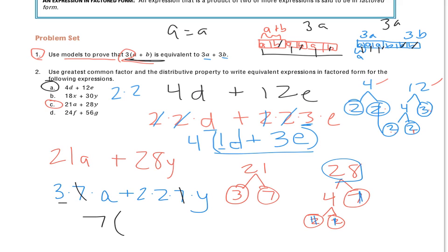So 3A, or 3 times A, plus I have 2, 2, and Y. And I can combine these 2's right here with multiplication, because that's what this dot in the middle is. 2 times 2 is 4, and then I'll keep the Y. So that's how I'm taking it with greatest common factor and the distributive property to write equivalent expressions in factor form.